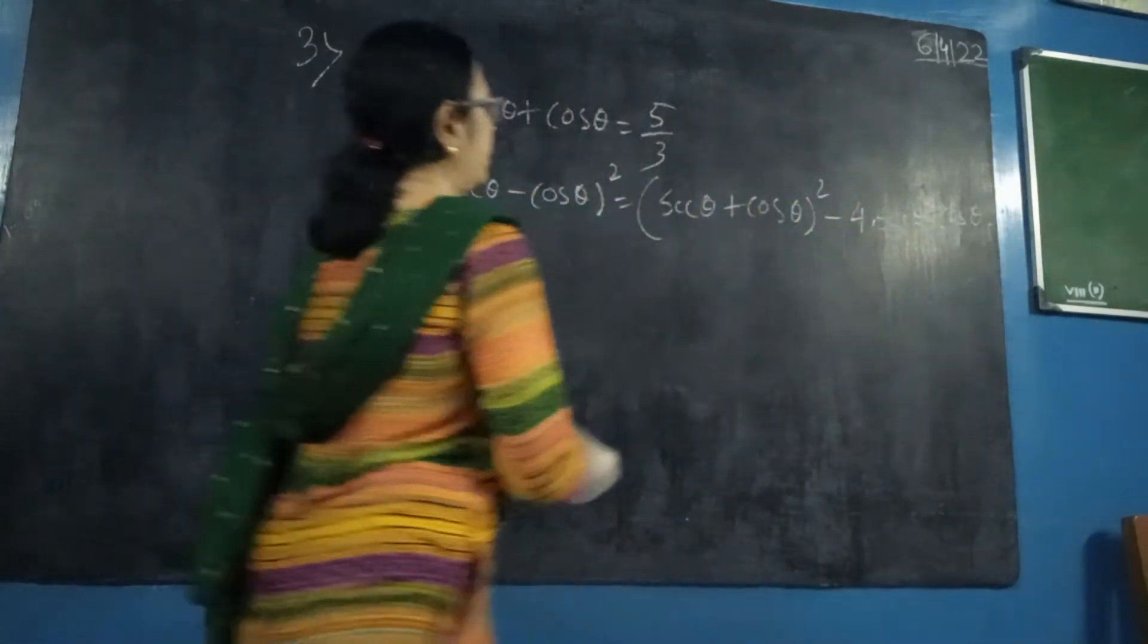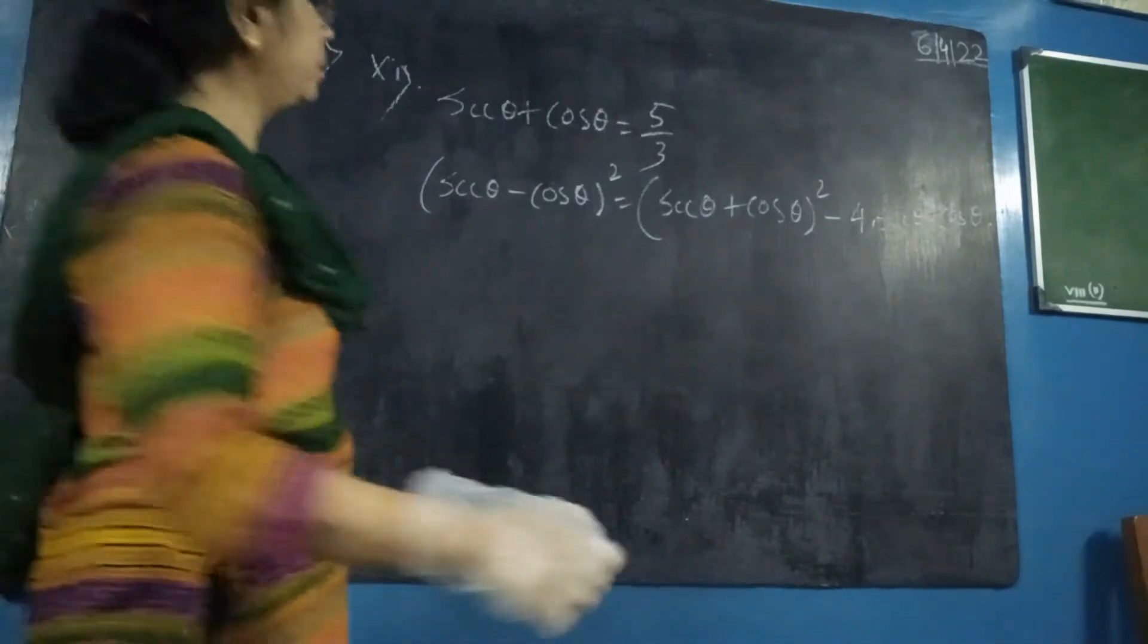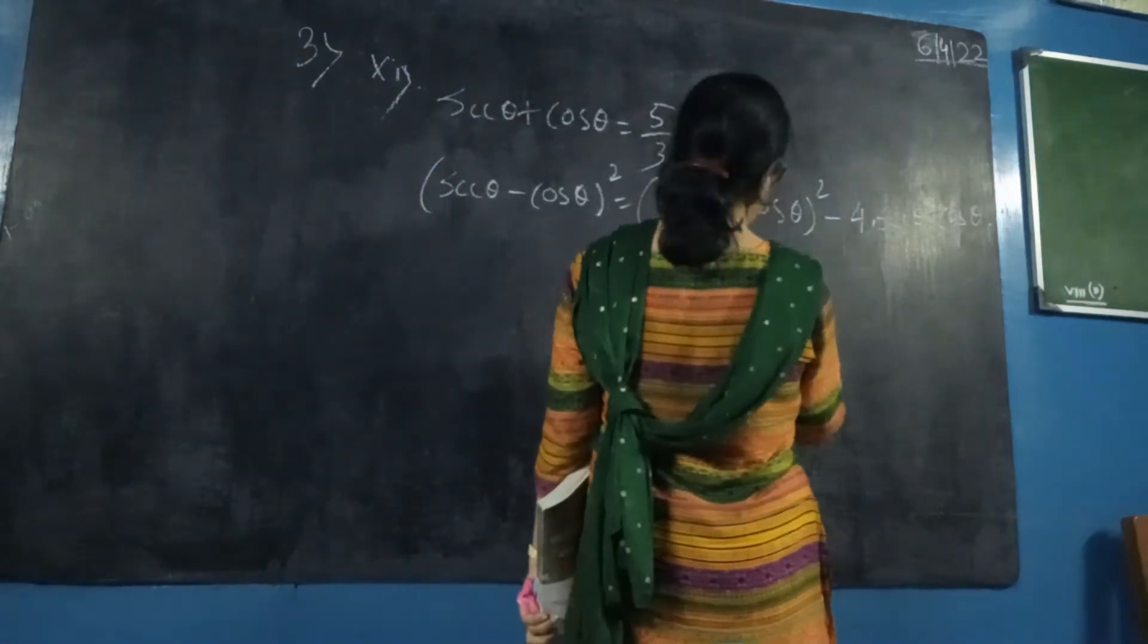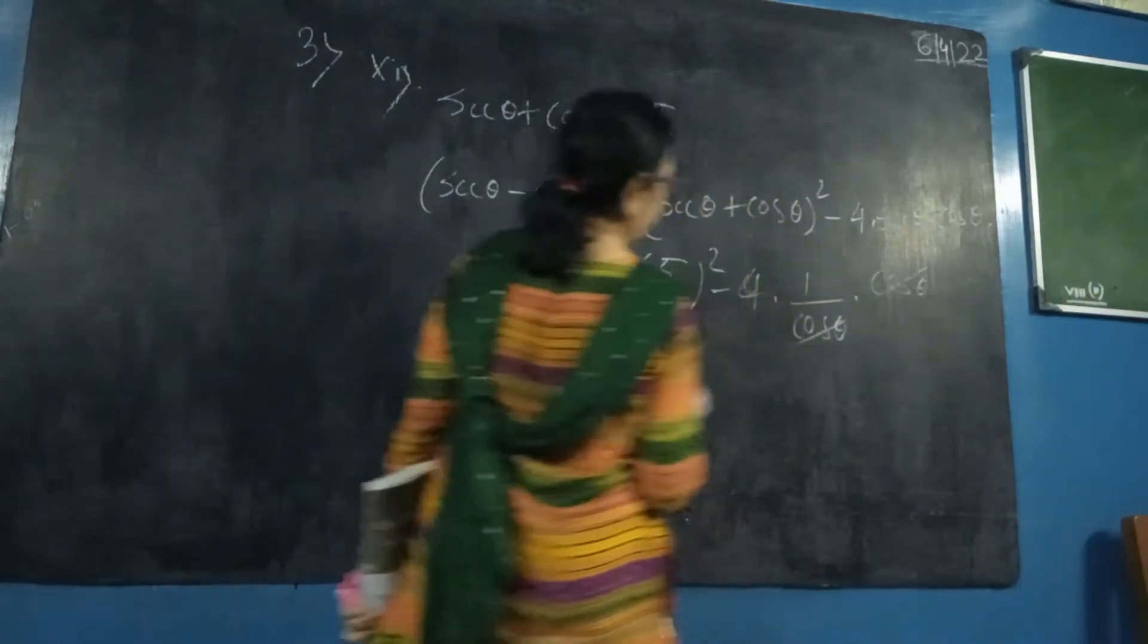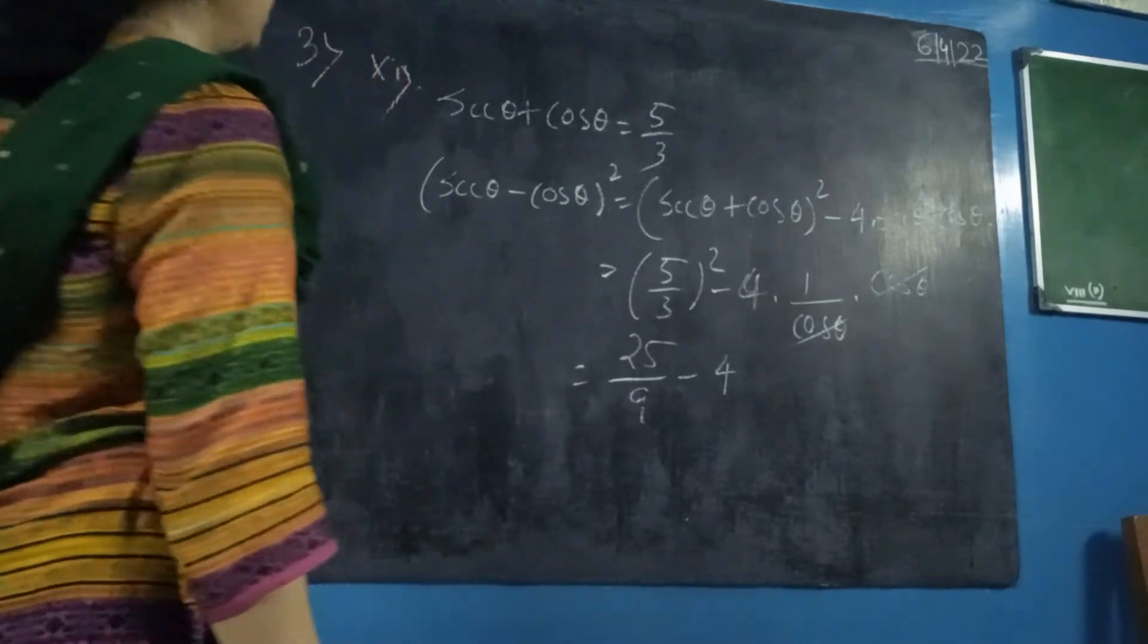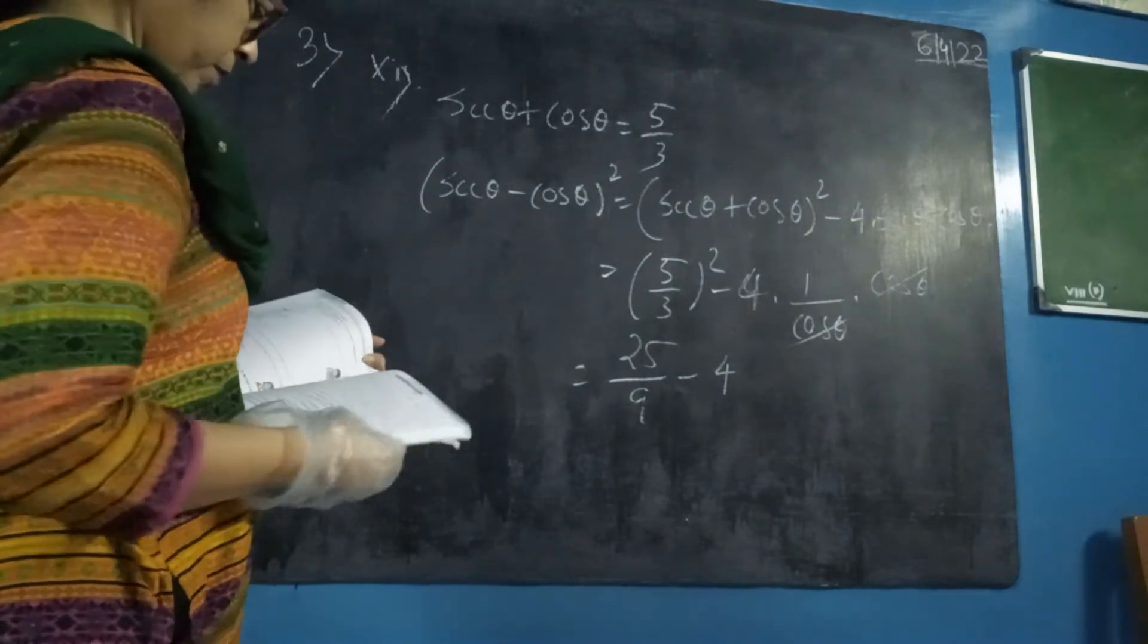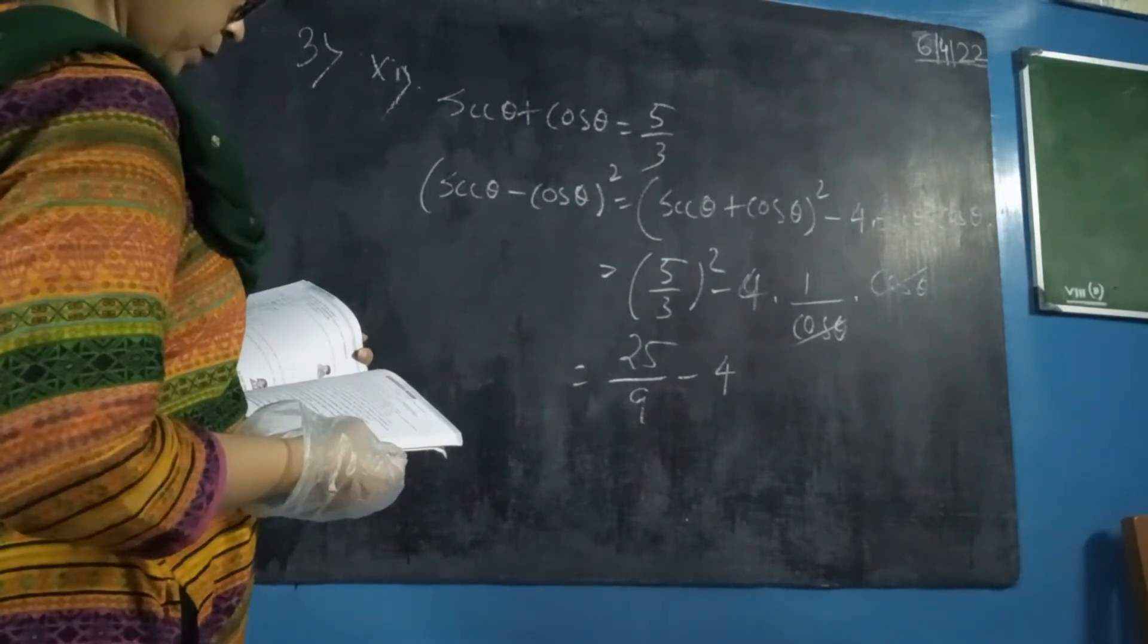Here, sine theta plus cosine theta whole square, 5 by 3 whole square minus 4. Again, you know secant and cosine, how they relate? Secant means 1 by cosine. So this is going to be 5 by 9 minus 4. That gives us the value of sine theta minus cosine theta.